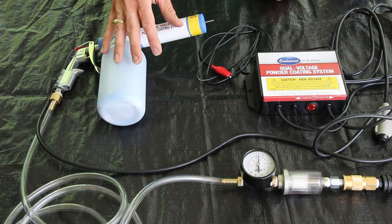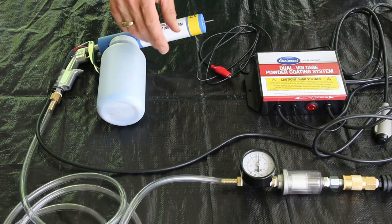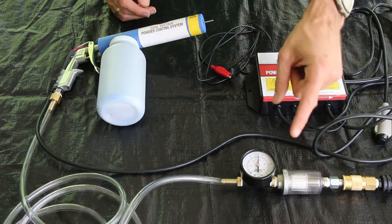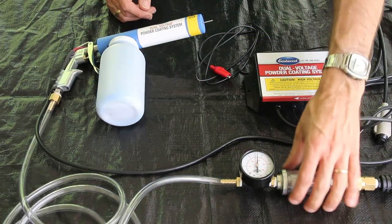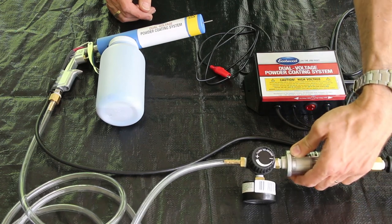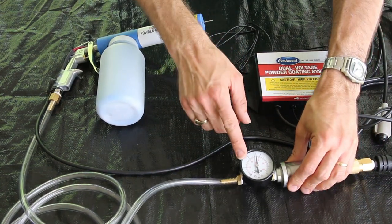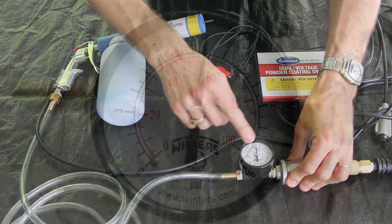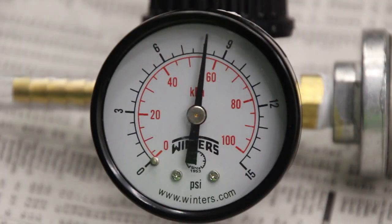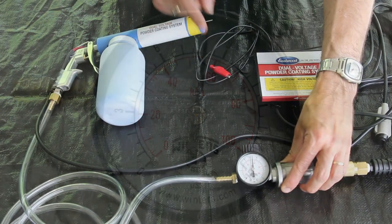Most air compressor regulators will go down that far, but the gauges they have are really hard to read down at that low pressure. So I have an ordinary little pressure regulator fitted with a low pressure gauge—this only goes up to 15 psi or 100 kPa—so I can see the pressure I'm setting much more accurately that way.